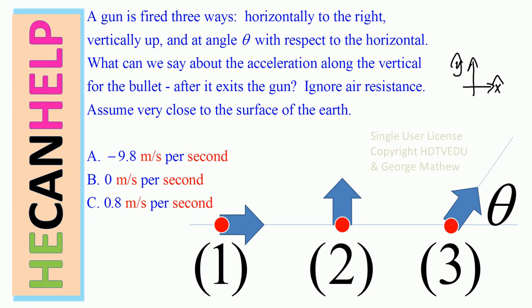Is it A, negative 9.8 meters per second per second? Or is it B, 0 meters per second per second? Or is it C, 0.8 meters per second per second?